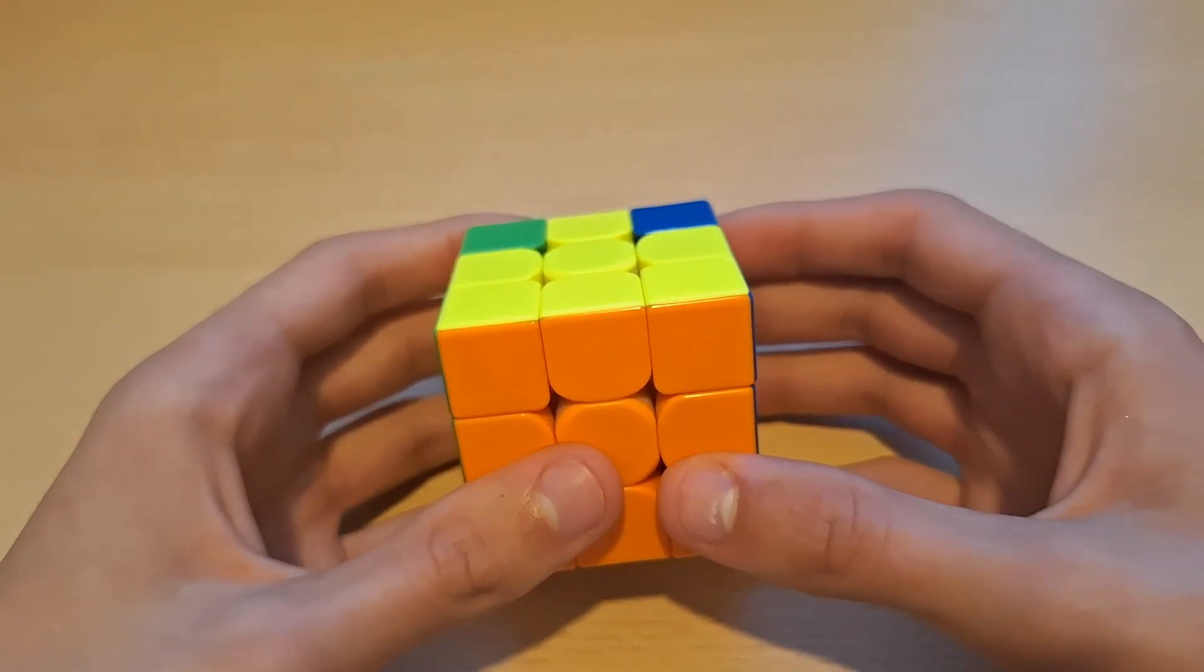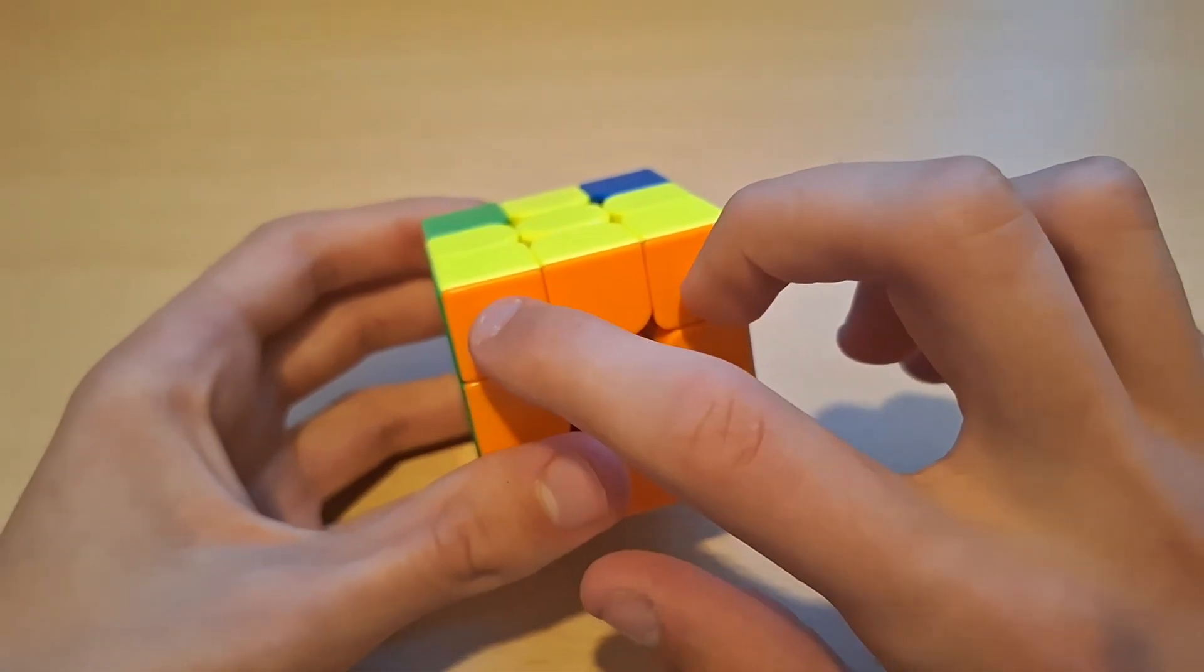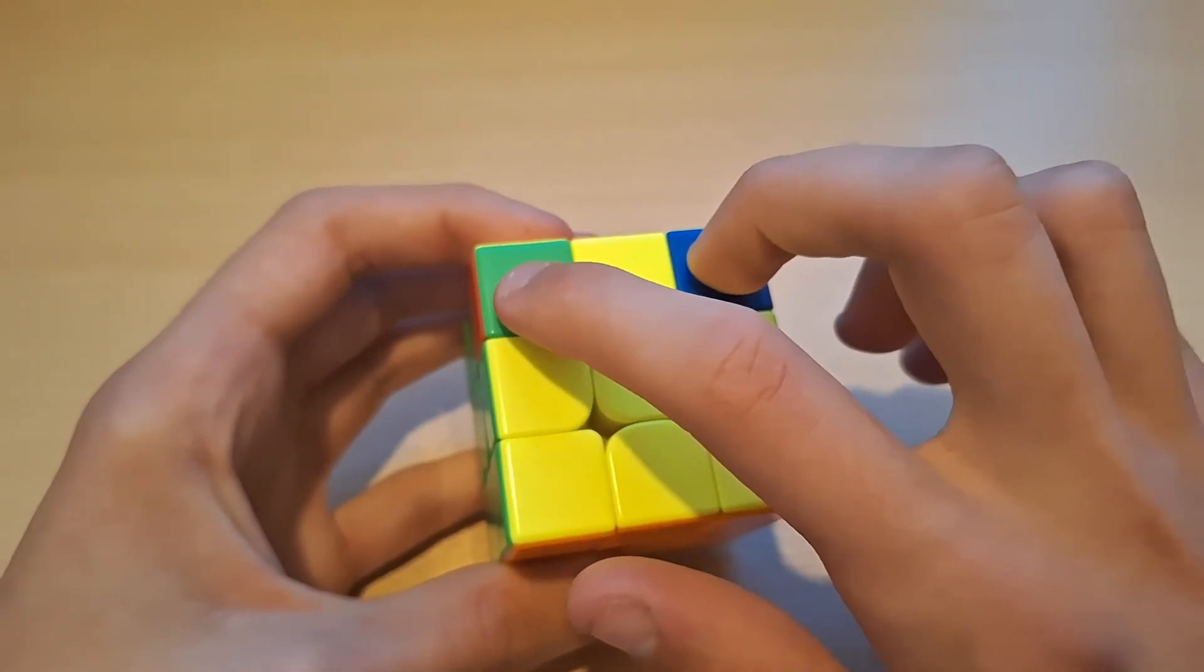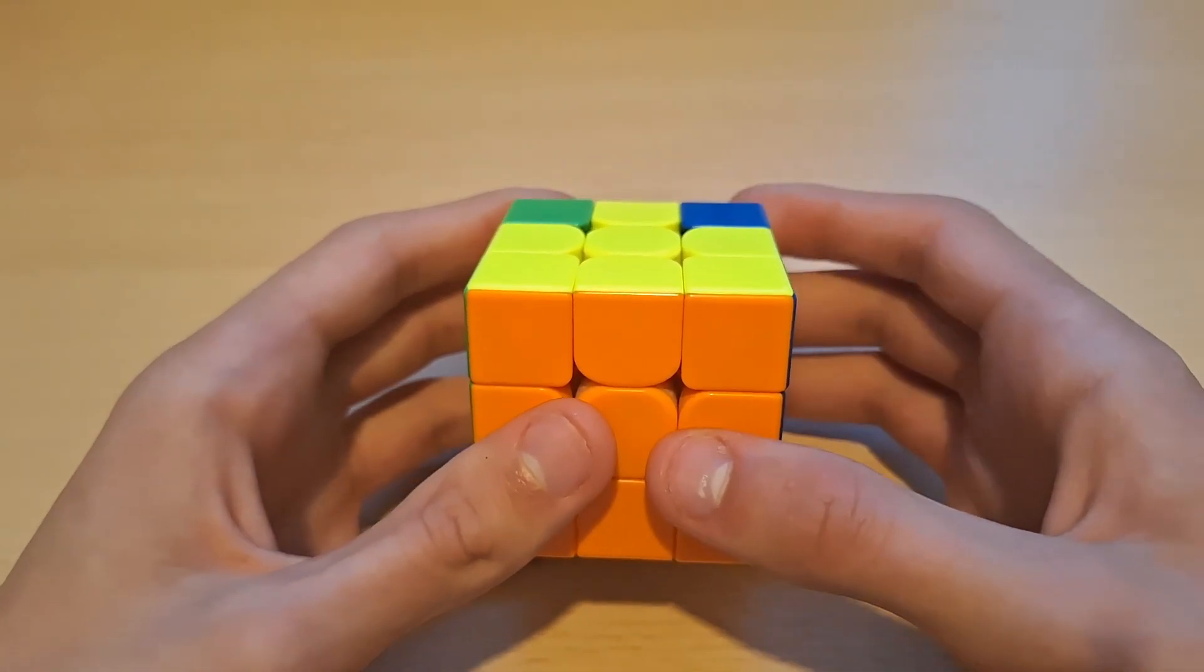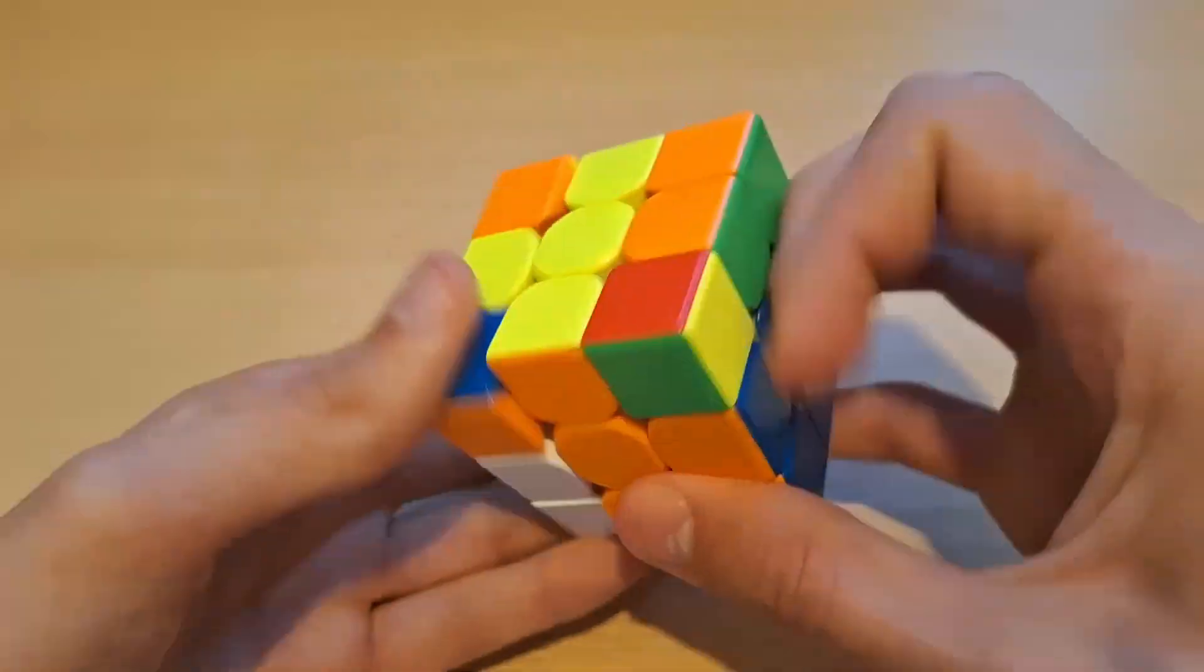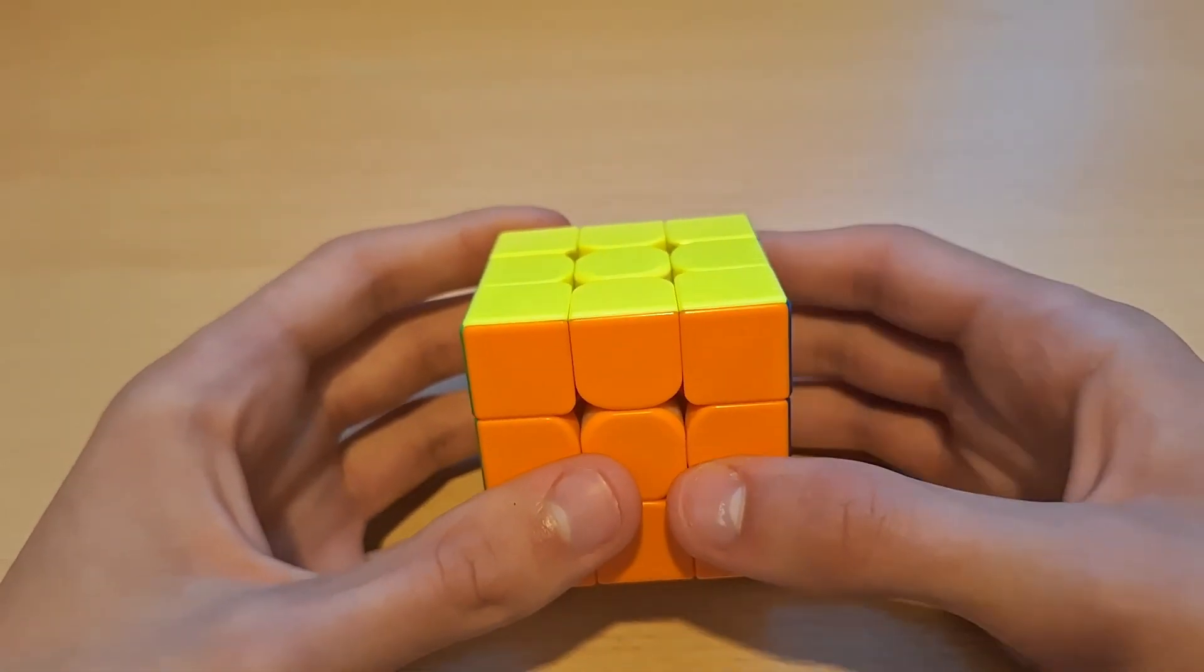So how you recognize whether you have ZBLL U6 or not is by looking at these two stickers and if these two are matching and these two stickers and if these two are diagonal. So if these two criteria meet, then you have ZBLL U6 and as shown before, you can just do one algorithm to solve the entire cube.